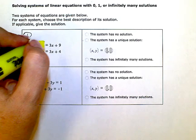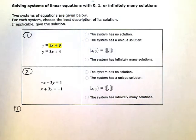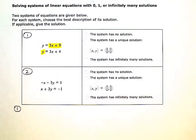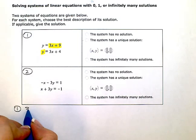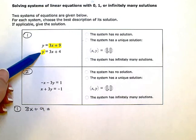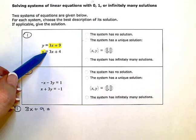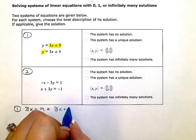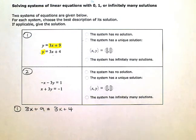I'm going to substitute the 3x plus 9 for the y in my bottom equation. When I rewrite that down here, it's going to be 3x plus 9 equals, because I put the 3x plus 9 in for y, equals 3x plus 4 on the other side. And then I'm just going to solve this equation, or proceed to solve this equation.